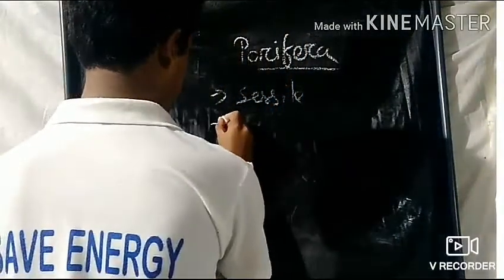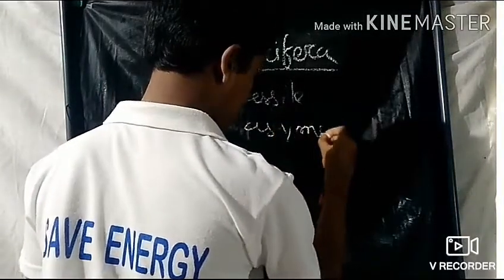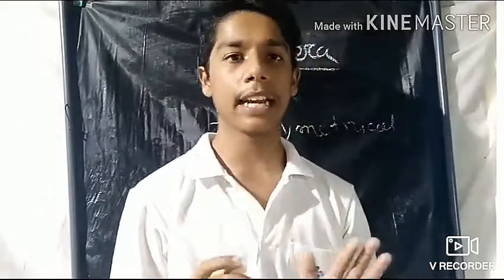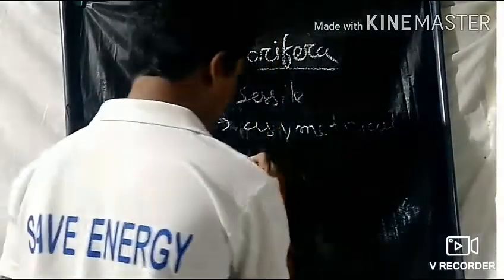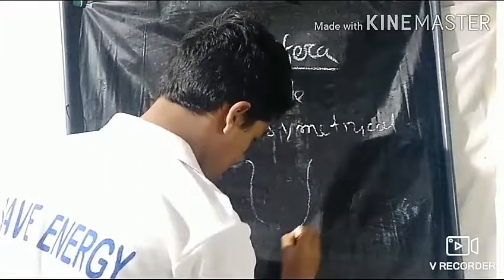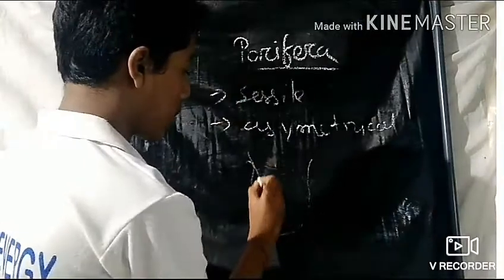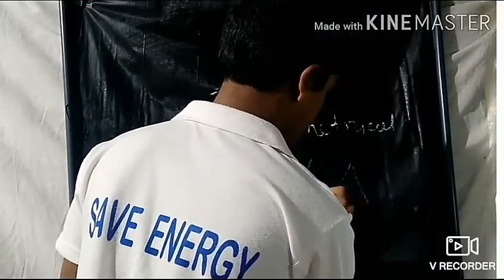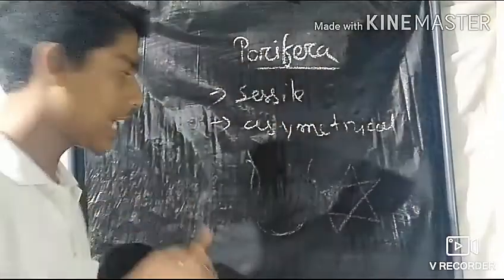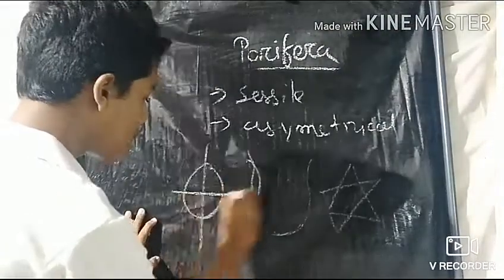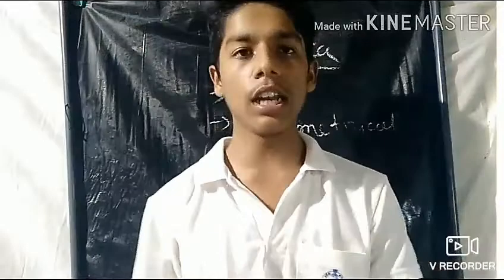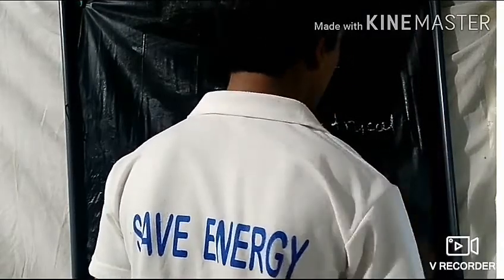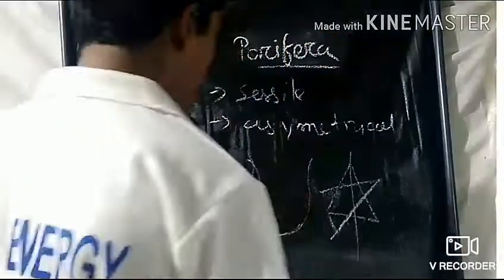What is asymmetrical? I will show you the structure. Simply, I will show you using a demo. If you take a round type shape, it is divisible into two equal parts easily. But a star type shape — if I divide it from a particular side, I cannot get two equal parts. That is asymmetry.